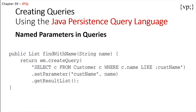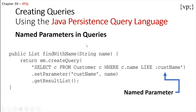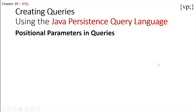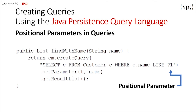Next, let's take a look at named parameters in queries. Named parameters are query parameters that are prefixed with a colon. Here the customer name is bound to the name from the parameter — the name is set to this customer name, which then sets the parameter inside our query. Alternatively, you can use positional parameters instead. So instead of using a colon followed by a variable name, you put a question mark and then a number in front of it, like ?1, and then use that number to set the parameter — for example, setting parameter 1 to name.